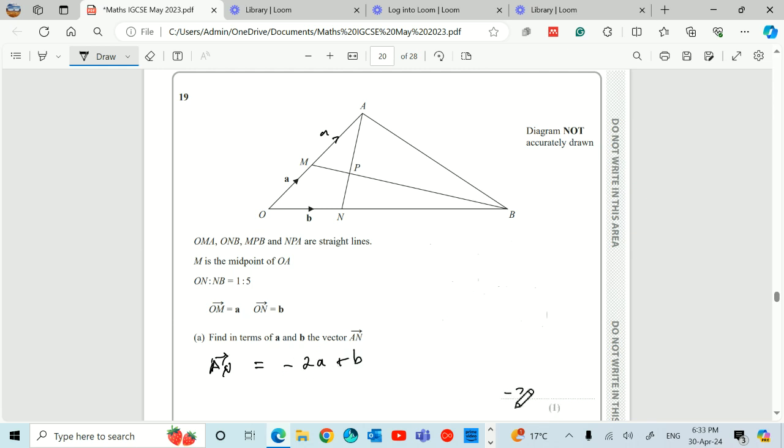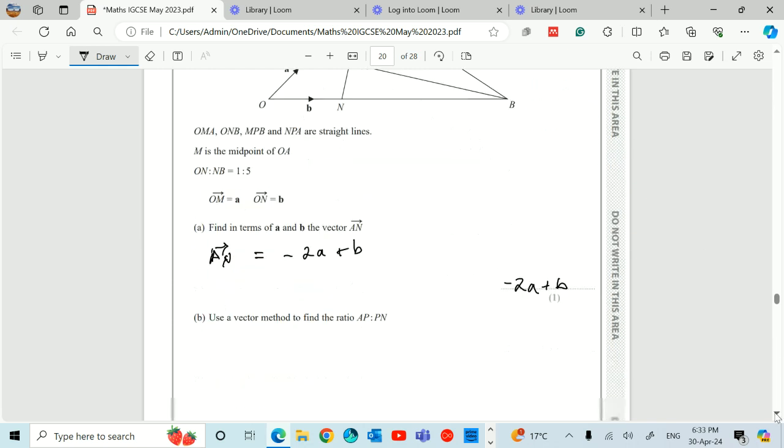And we'll just write that here for one mark. Minus 2A plus B. That was easy enough for one mark.